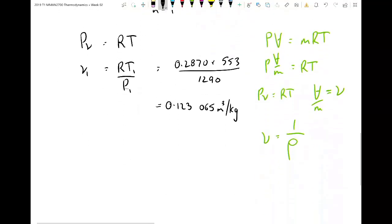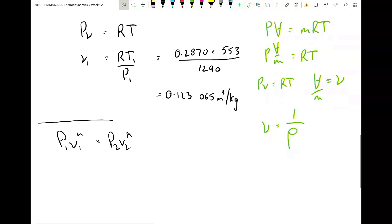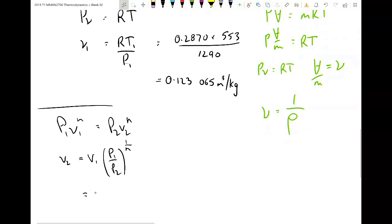Now, the next thing that we can exploit is we know that P1V1 to the power of, well, let's say N, equals P2V2 to the power of N. Because it's polytropic, and that's what polytropic means. We can make V2 the subject of this equation, and say V2 equals V1, P1 divided by P2 to the power of 1 divided by 1.4. Ah, I've substituted in straight away. N equals 0.123065 times 1290 onto 210 to the power of 1 divided by 1.4.